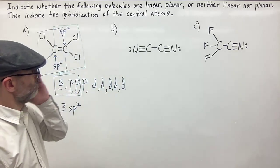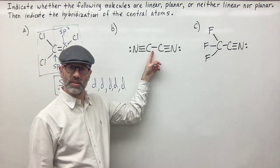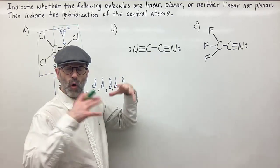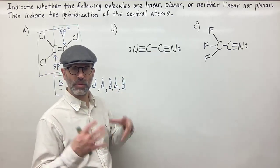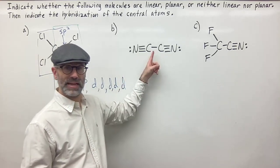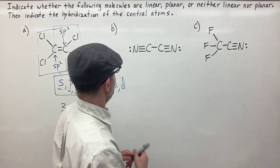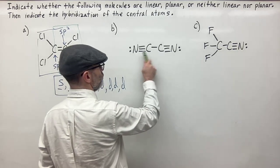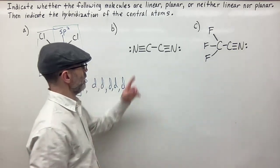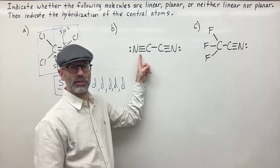Now what about this next molecule? Here you can see there is just a single bond, so there's no pi bond, no overlapping of unhybridized p orbitals, and therefore there is free rotation around this bond — we have a sigma bond here. But notice over here we have a triple bond, so here we have one sigma bond and two pi bonds.